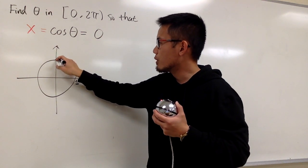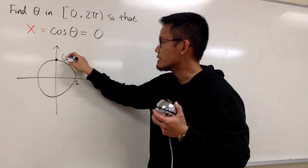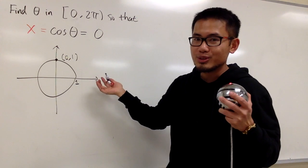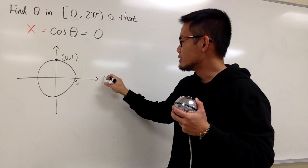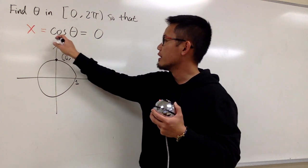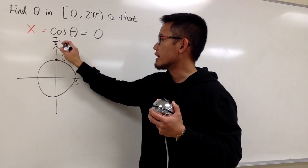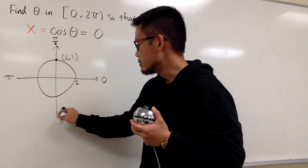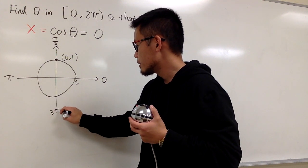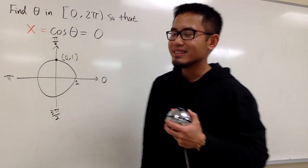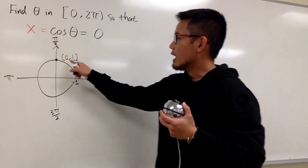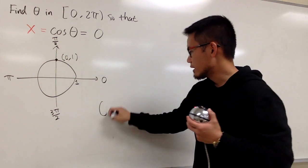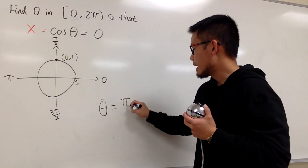That means I'm looking at this point, because at this point we have (0, 1) — that's the x value. We pretty much know what the answer is already, because this right here is 0 radians, this is π/2 — the 90 degrees, π/2 radians — and this is π, and this is 3π/2. When x is equal to 0, it's right here. That's the first answer: θ should be π/2.